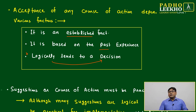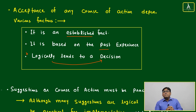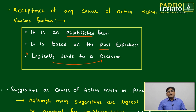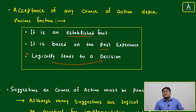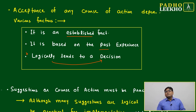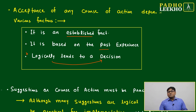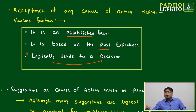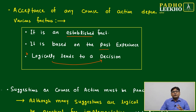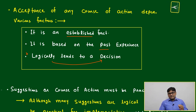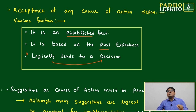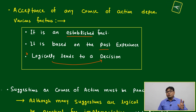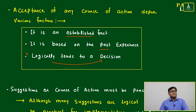One issue that arises: many times logically a course of action will lead toward the decision, but it will not be practically possible. Another issue is that logically it may go toward the solution, but it creates another kind of problem. To solve one problem we are creating another problem — that is also not acceptable. We will take a few examples to understand this better.